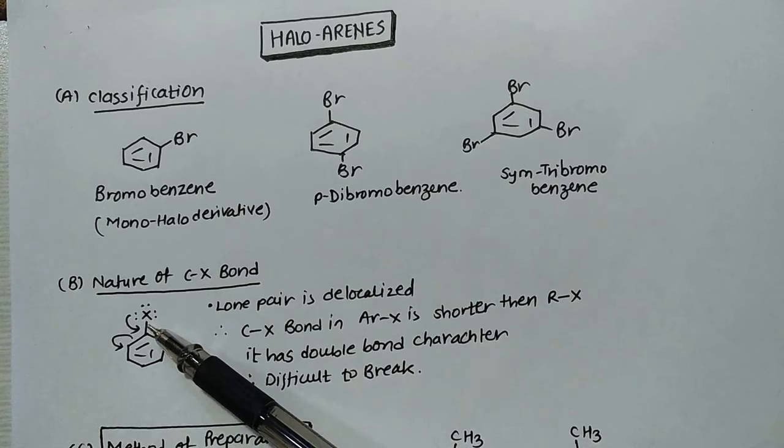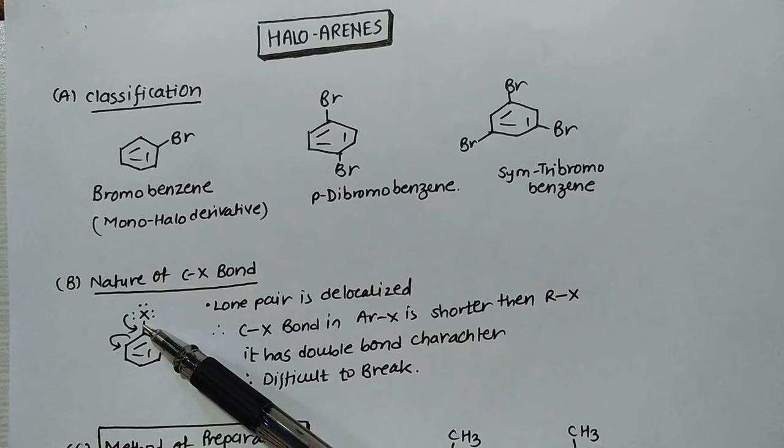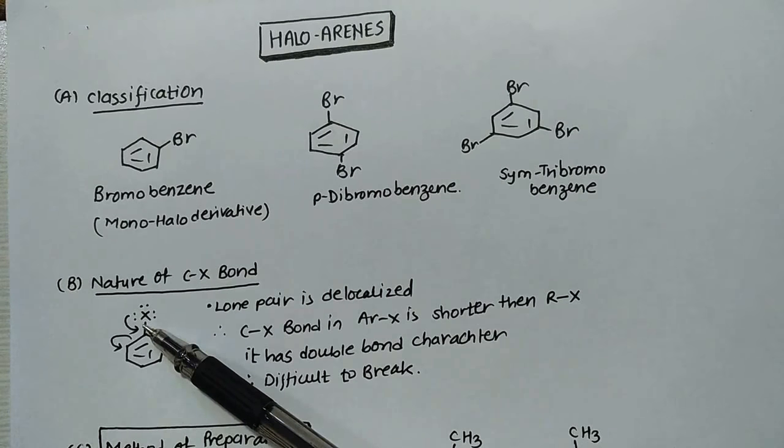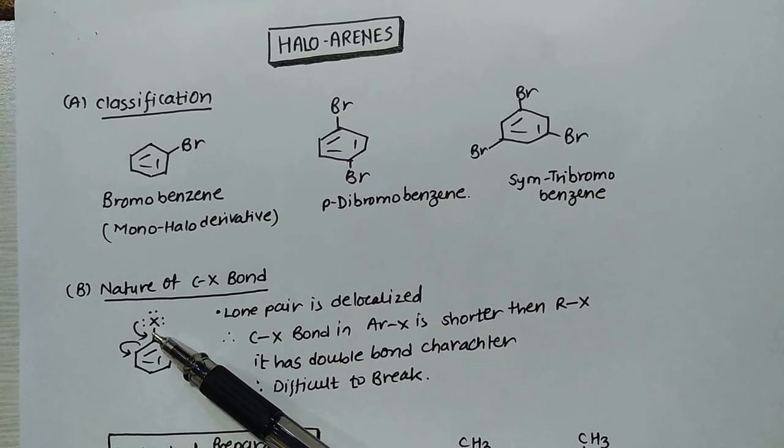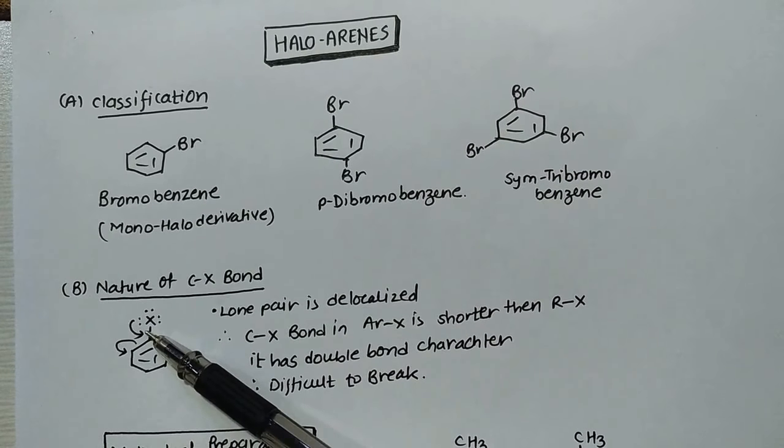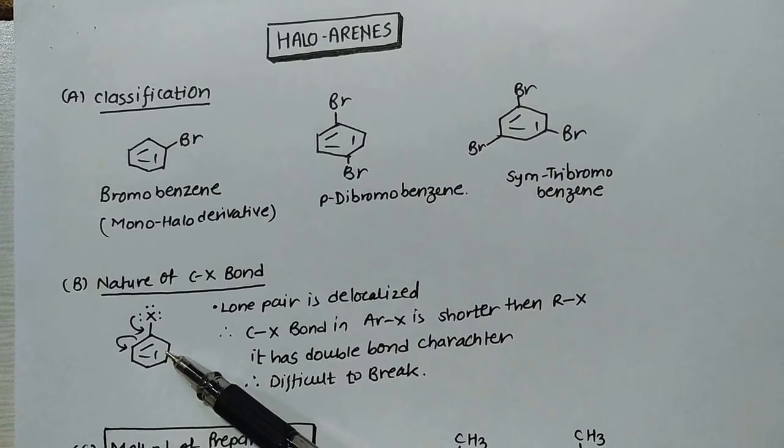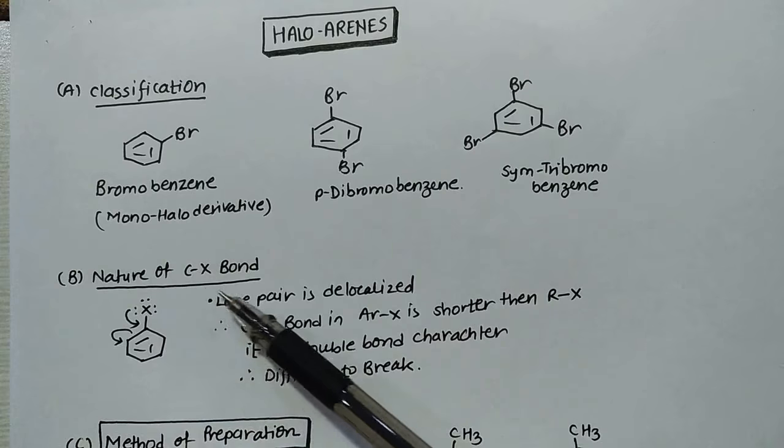This bond is single bond but has double bond character, like this. So this bond has partial double bond character. This bond is very difficult to break. Nucleophilic substitution, like in the alkyl halide NSR, is not in the halo arene. NSR is not easy. So this is the difference in both nature.